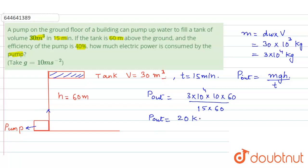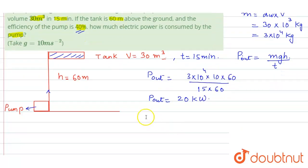But now you can see that the efficiency is only 40 percent. So let us try to find out the input power to this pump. We know that the formula that relates the input and the output power with the efficiency is simply: efficiency equals P output divided by P input, and this is only 40 percent.